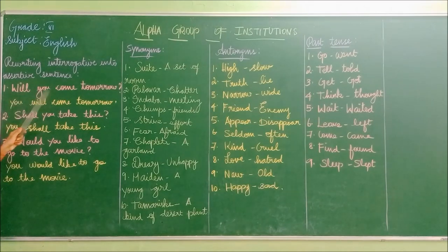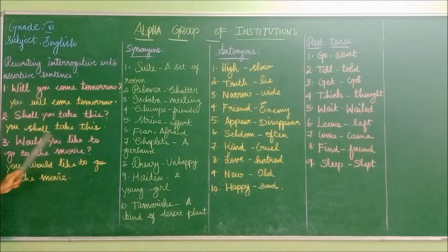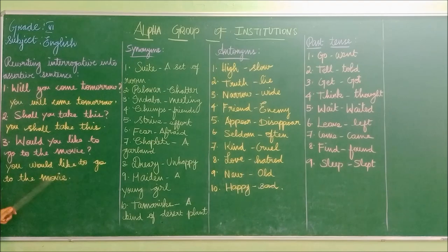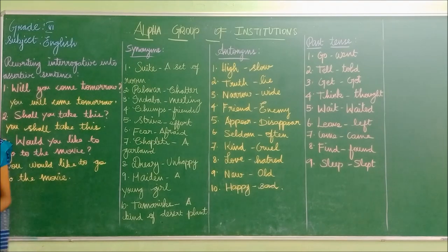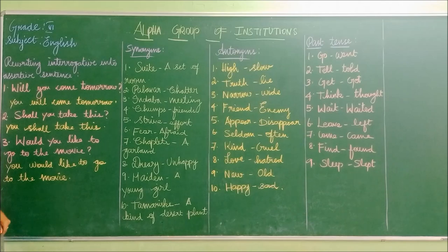To summarize: 'Will you come tomorrow?' → 'You will come tomorrow.' 'Shall you take this?' → 'You shall take this.' 'Would you like to go to the movie?' → 'You would like to go to the movie.' Likewise, you will be given sentences in your test and you have to rewrite the interrogative sentence into an assertive sentence.